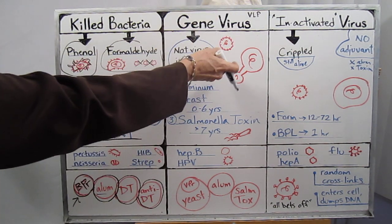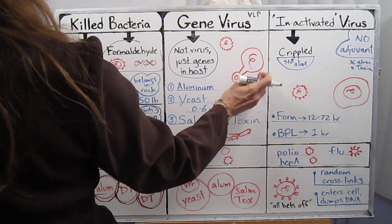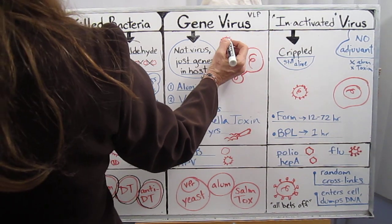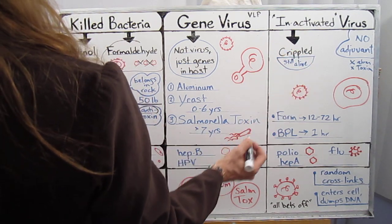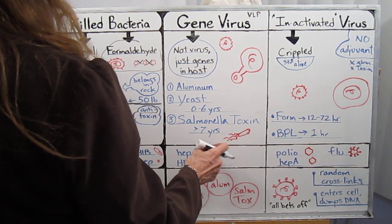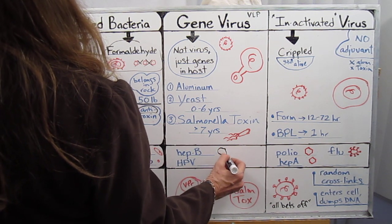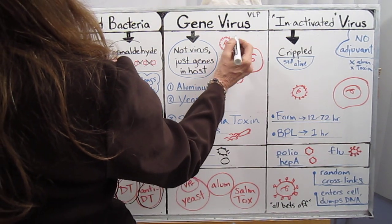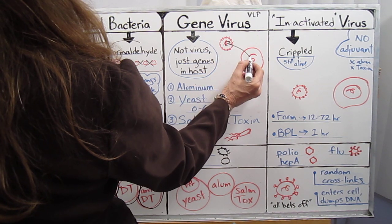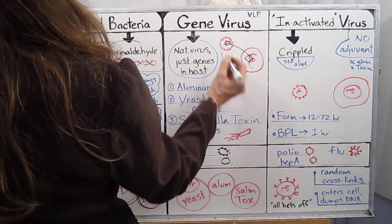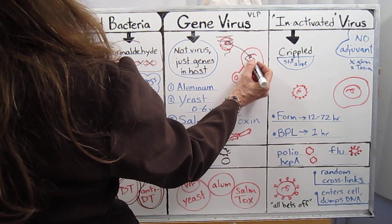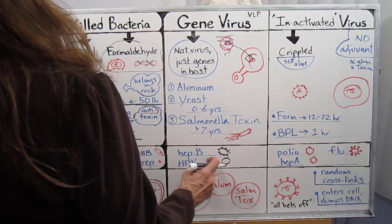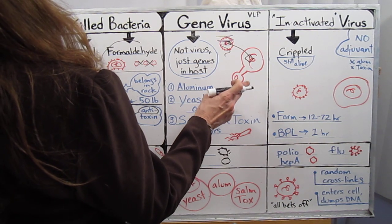The gene virus doesn't exist as a virus — it exists in the host cells. This is the HPV; it's round and has little spikies on it. What they've done is taken the genetic material and put it inside of yeast genes. You no longer have this virus existing as a whole particle — you have it existing as genetic material within the host cell. In the case of the gene viruses for HPV, they are using yeast.